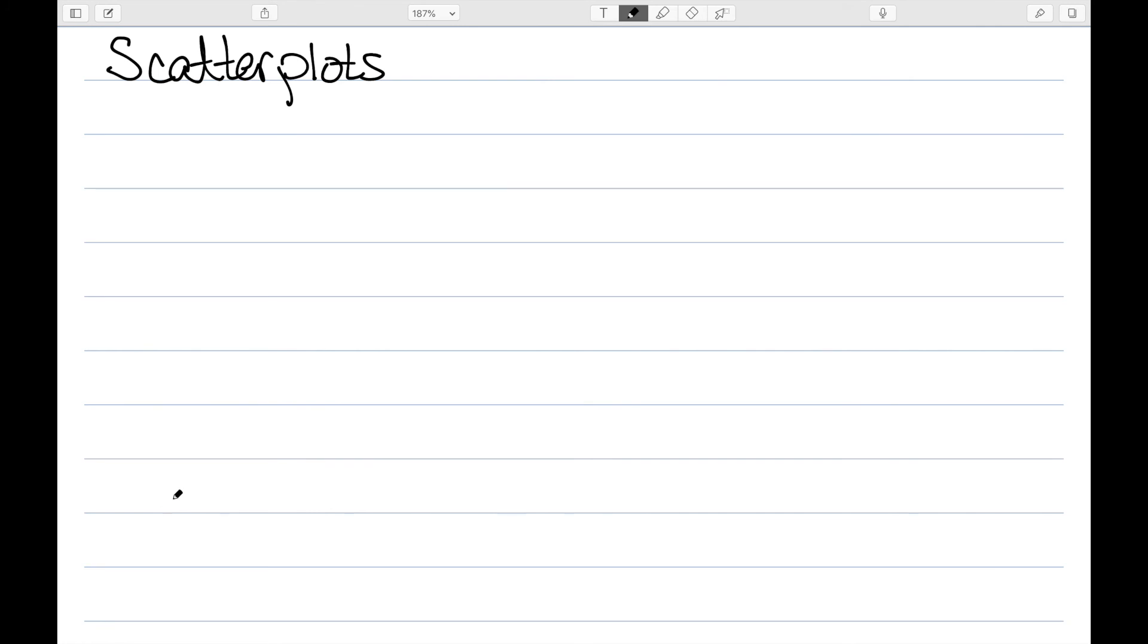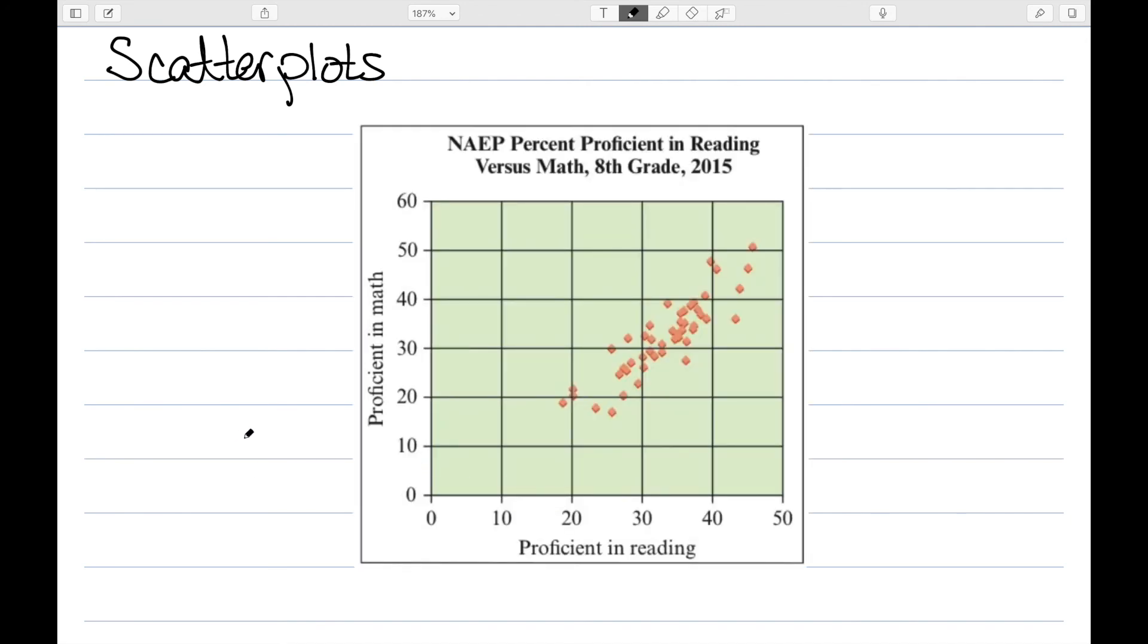Finally, we have scatter plots. A scatter plot consists of a collection of data points that are plotted in a plane. As an example, this is the percent proficient in reading versus math in eighth grade in 2015. So the x-axis has their percentage proficiency in reading, the y-axis is in math, and then we have each individual point.